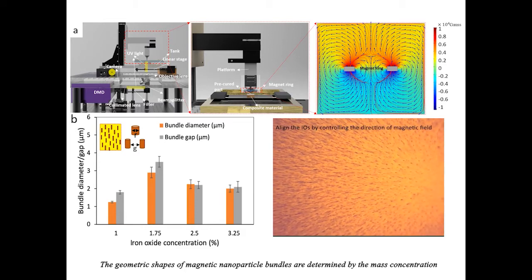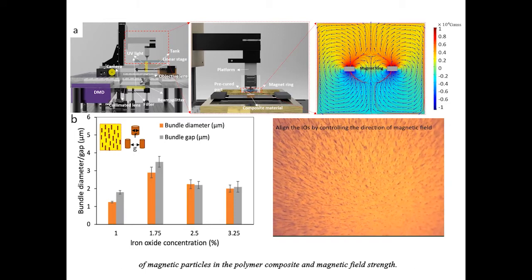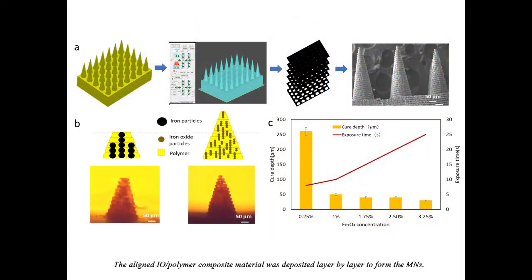The geometric shapes of magnetic nanoparticle bundles are determined by the mass concentration of magnetic particles in the polymer composite and magnetic field strength. The aligned IO polymer composite material was deposited layer by layer to form the microneedles. In order to fabricate microneedles with sharp tips, the curing characteristics of iron and iron oxide-reinforced composites during the MF3DP process were studied.